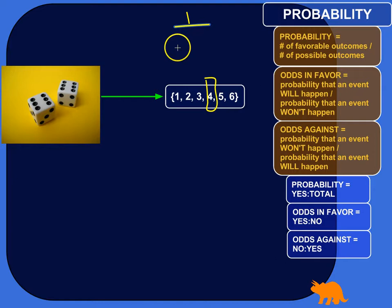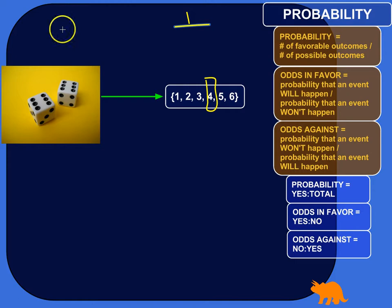Let me give you an example where there's more than one favorable outcome. Maybe if you're pulling cards out of a deck and you want to calculate the probability of pulling a red card. There are lots of red cards in the deck, so the number of favorable outcomes will be high.